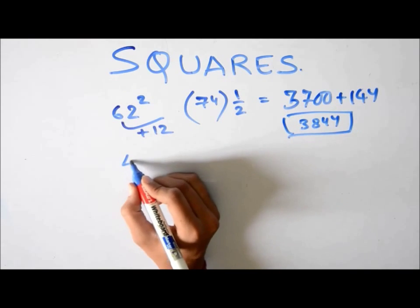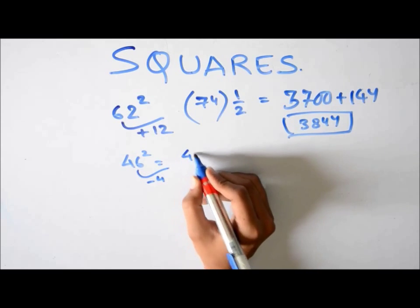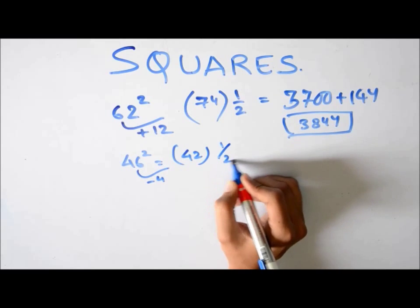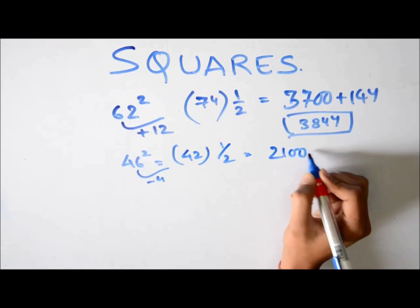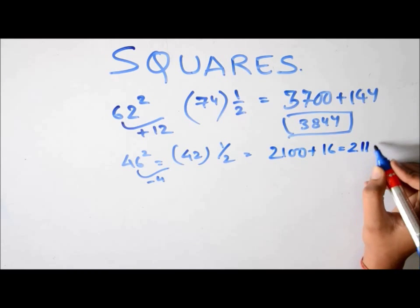Suppose the number is 46. Again 4 less than 50. So you do minus 4. 42. Half of it 21. Again 2100 and 4 square 16. That is 2116.